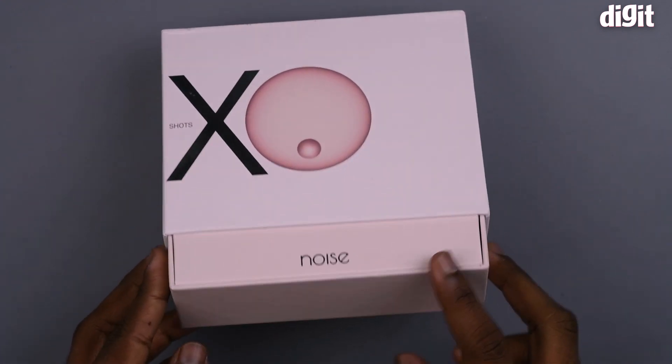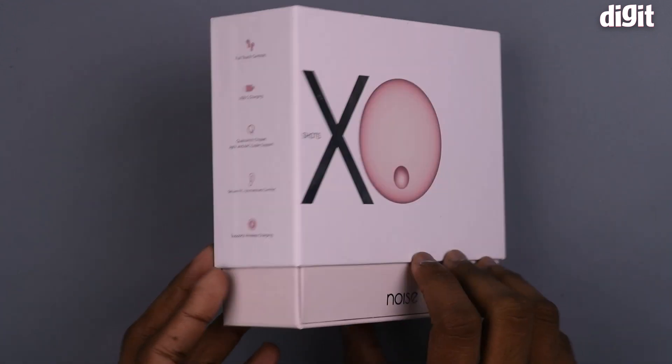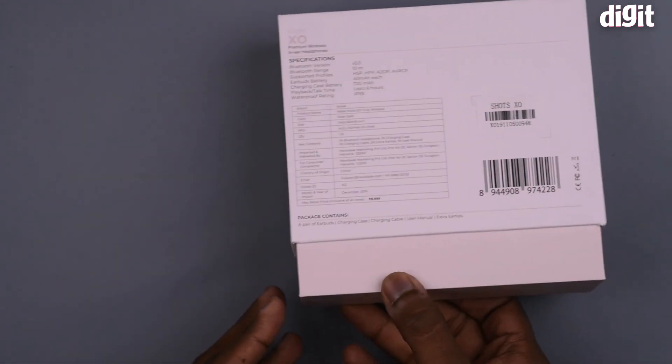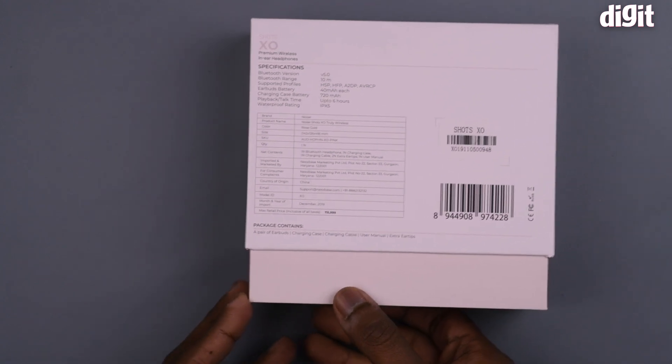It is a rose gold variant and the box looks pretty aesthetic as well. On the back and sides of the box, you see the specifications. It's got Bluetooth 5.4 with a 10 meter range. Now let's unbox.